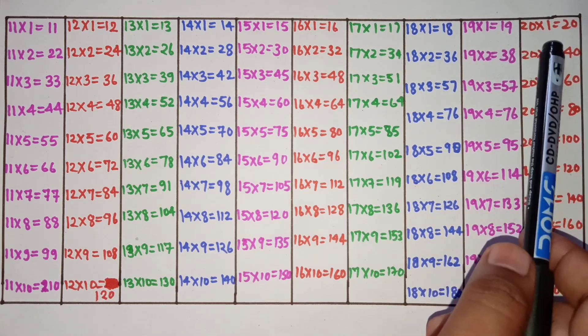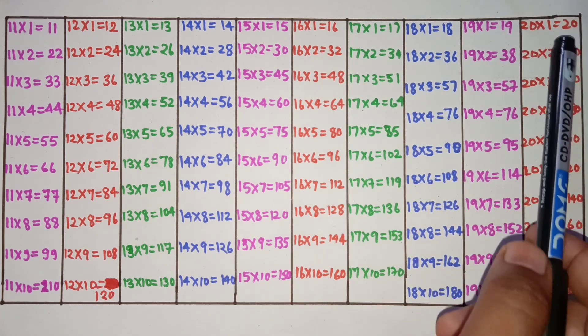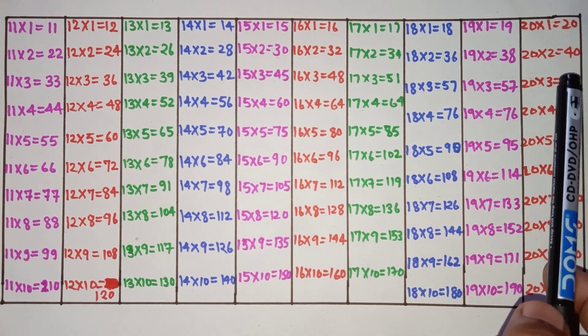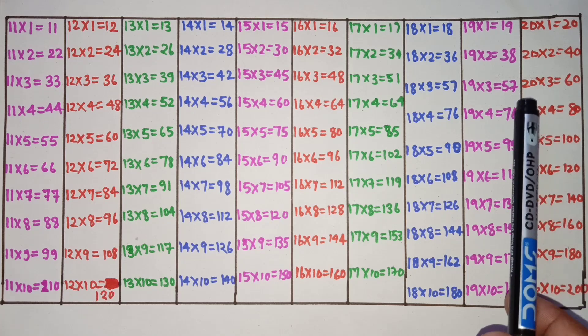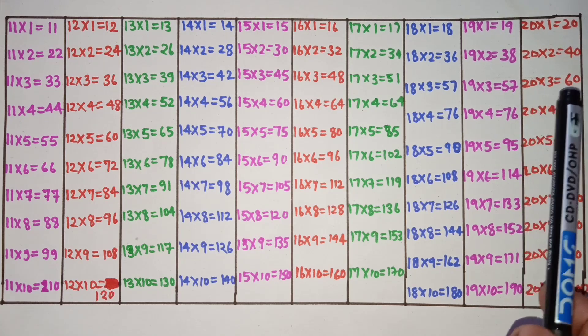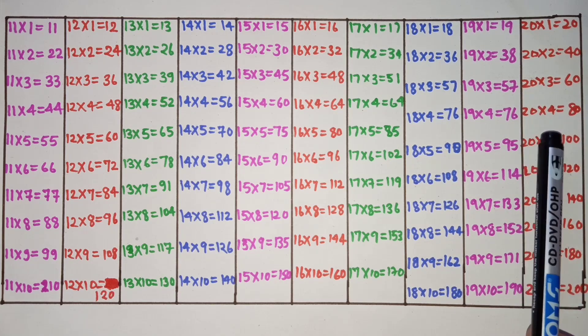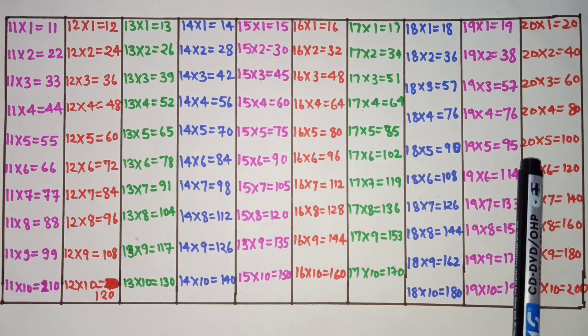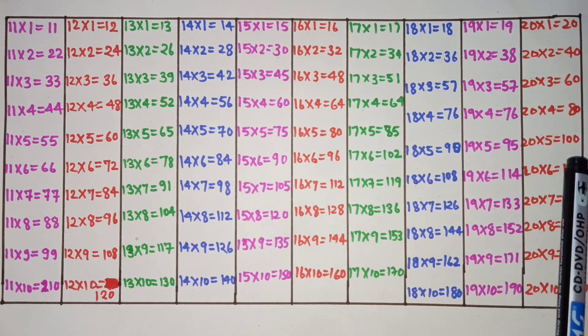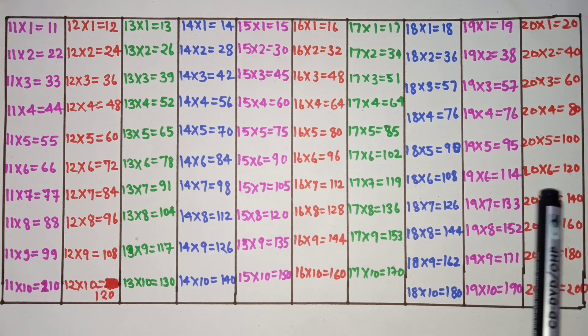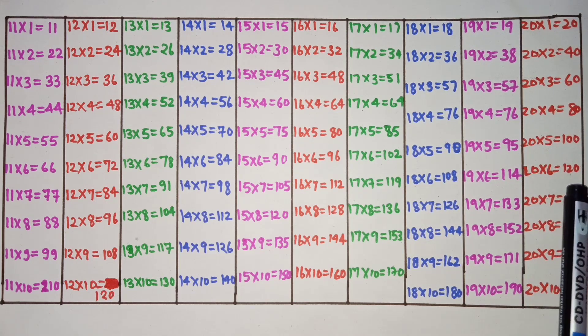20 1s are 20, 20 2s are 40, 20 3s are 60, 20 4s are 80, 20 5s are 100, 20 6s are 120.